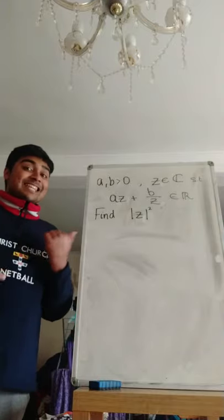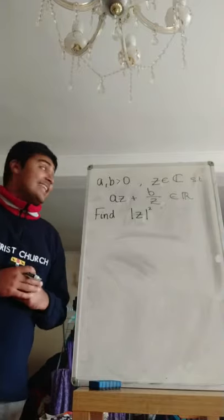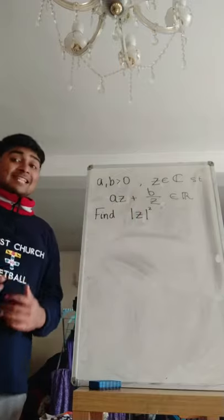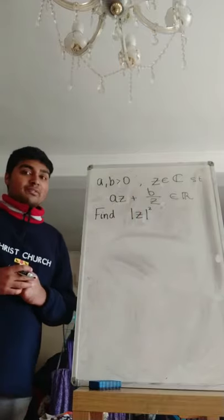Hi, suppose we have positive real numbers a and b and a complex number z such that a times z plus b over z is some real number and we want to find the magnitude of z squared.